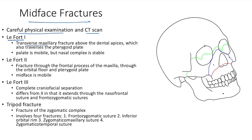LeFort type 1 is a transverse maxillary fracture above the dental abscesses which also traverses the pterygoid plate. The palate is mobile but the nasal complex is stable.